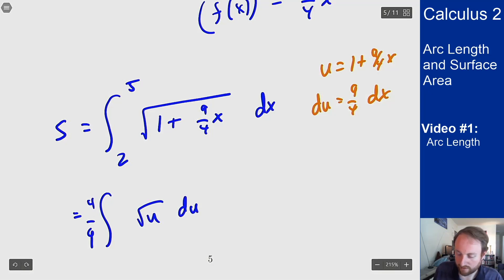My bounds now become 1 plus 18/4, or 1 plus 9/2, which is 11/2, and then 1 plus 45/4, which is 49/4. I can then integrate this function, which gives me (4/9) times (2/3)u^(3/2) between these bounds, and we just plug these in. That's what you get for the arc length of the curve between those two points.